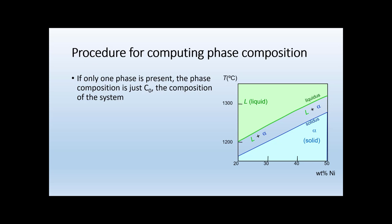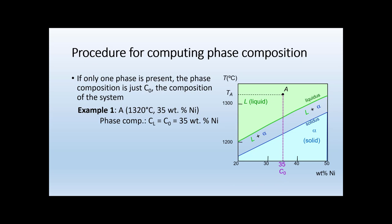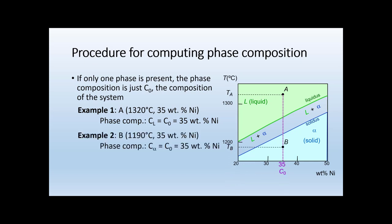The procedure for computing phase composition is a little more involved, but not too challenging. If only one phase is present, the phase composition is just C₀, the composition of the system. For example, at 1320°C and 35 weight percent nickel, the system is fully liquid, so the phase composition of the liquid CL equals C₀ = 35 weight percent nickel. Similarly, at 1190°C and 35 weight percent nickel, the system is fully alpha, so the phase composition of alpha also equals C₀ = 35 weight percent nickel.